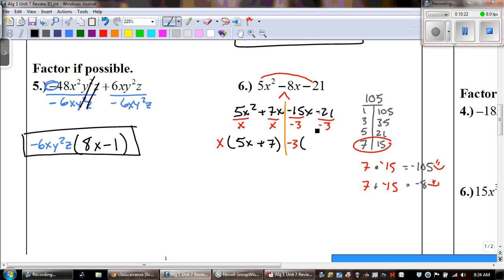And then, negative 15 divided by negative 3 is a positive 5x. And if you look, we did it right, because those match. So, our final answer is 5x plus 7 times x minus 3.